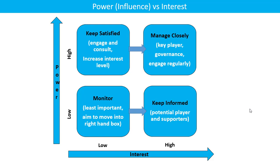The third quadrant is low power and low interest. Stakeholders here have low influence on the project and low interest as well, so we just monitor them. They do not need to be managed very closely, but we should aim to move some of them from the low-low category to a higher category if possible.